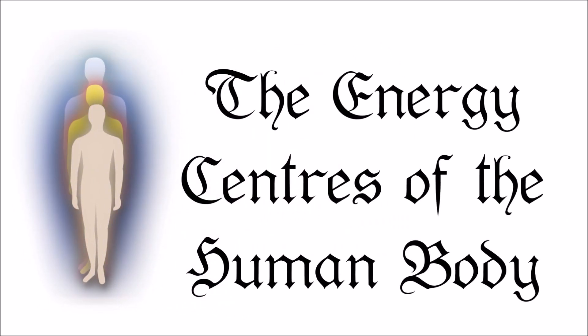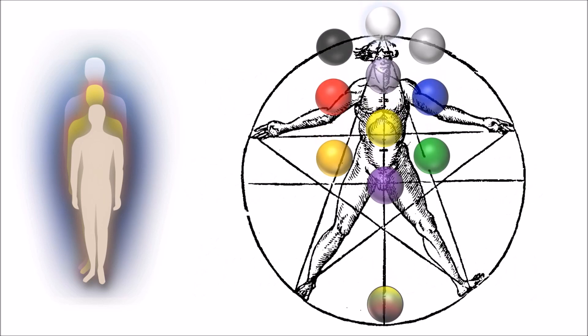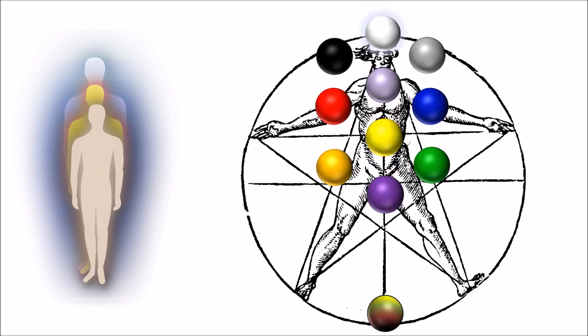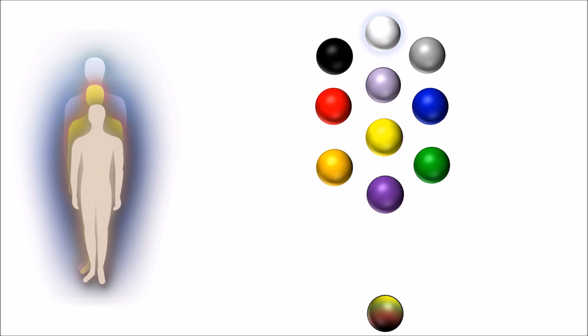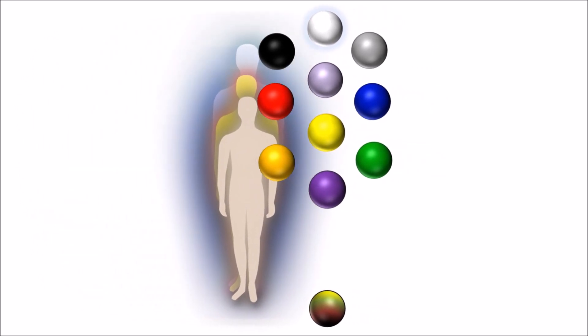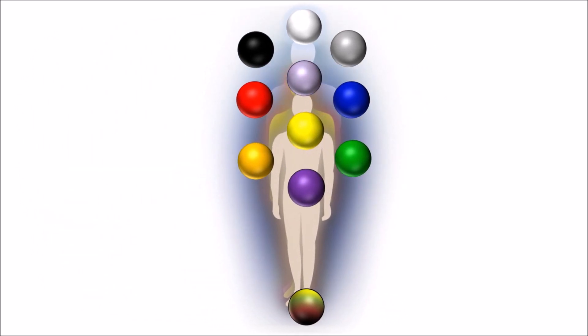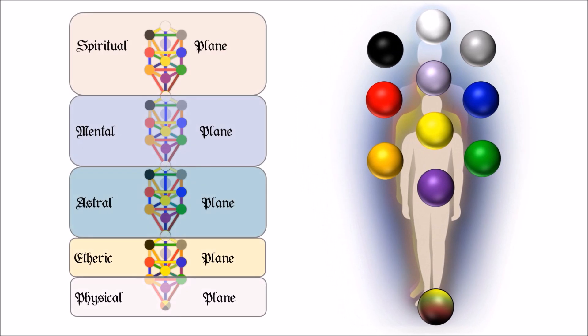Each body on every plane of existence has, just like the physical body, various organs or energy centers. These are based on the spiritual principles of the tree of life, the sephirot. On each plane there is a tree of life, and its sephirot correspond to the respective energy centers of that plane. The sephirot shape each body and its aura according to their nature, function and effect.